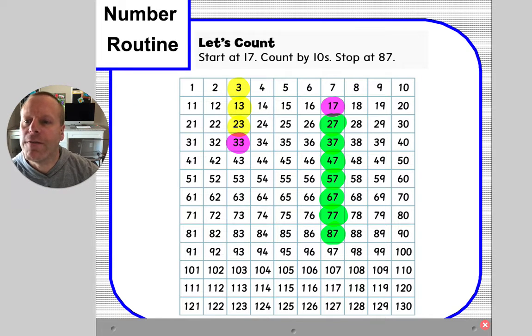So a good rule of thumb is on a hundreds chart, if you move up, that's the same as minusing a 10. But if you're moving down on the hundreds chart, you are changing the 10s not smaller, but you're changing that 10 to get bigger each time. Excellent. And I remember this from the other day.